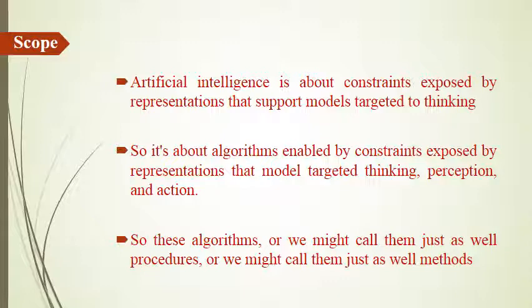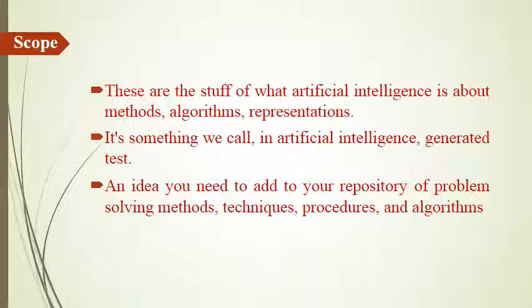These algorithms — also called procedures or methods — are used to solve certain problems on the basis of thinking, perception, and action. Artificial intelligence is about the constraints exposed by representation, and it must support models which are targeted to thinking. These algorithms, procedures, and methods are what artificial intelligence is fundamentally about.